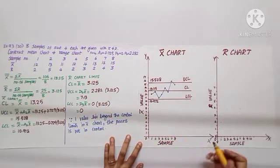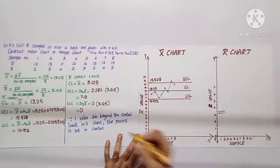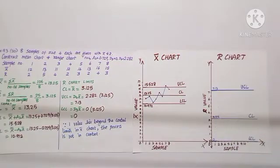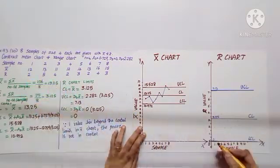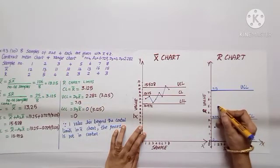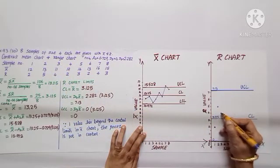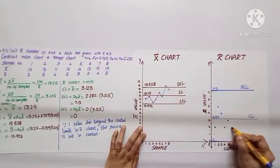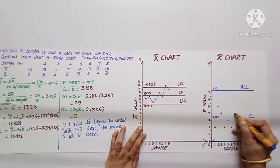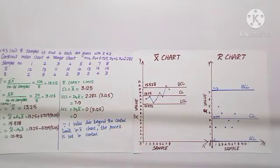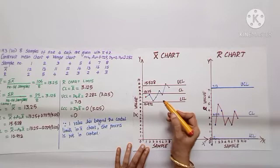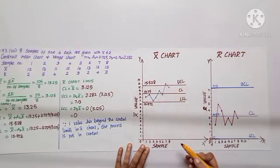Let us continue plotting the range chart. CL is 3.125, UCL is 7.13, and LCL is 0. We plot the range points: 1→2, 2→5, 3→4, 4→2, 5→3, 6→2, 7→4, 8→3. Joining the points, all values lie well within the control limits. However, since one point in the x-bar chart lies outside the control limit, we declare the process is not in control.